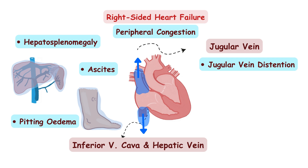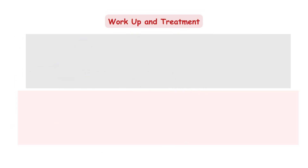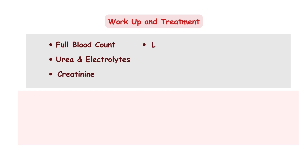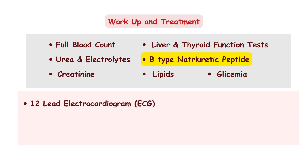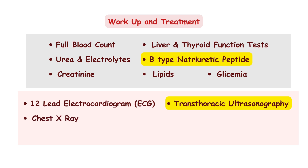Careful evaluation of the patient's history and physical examination, including signs of congestion, can lead to important information about the underlying cause and eventually a certain diagnosis. Other necessary tests include basic tests such as full blood count, urea and electrolytes, creatinine, liver and thyroid function tests, levels of B-type natriuretic peptide — a substance released by the ventricles — lipids, glycemia, and so on. Then a 12-lead ECG to look for underlying arrhythmias or ischemic events, transthoracic echocardiography as the key investigative tool to assess cardiac function and determine ejection fraction, chest X-ray to look for signs of pulmonary congestion and cardiomegaly, and cardiac MRI.